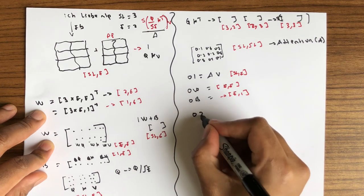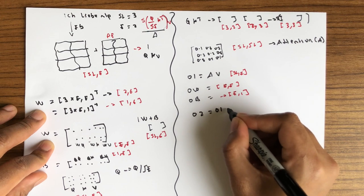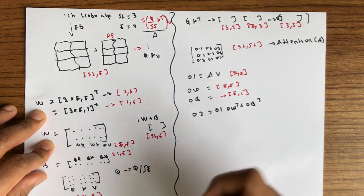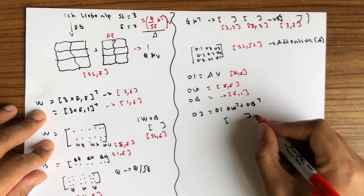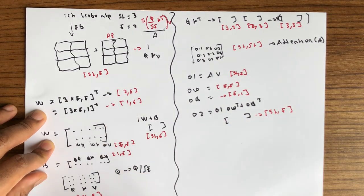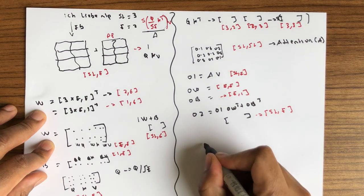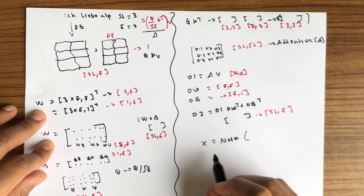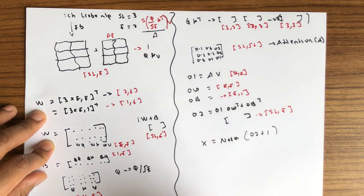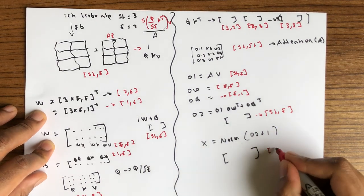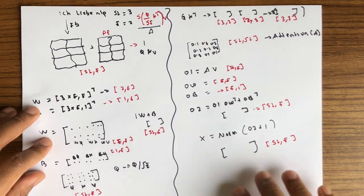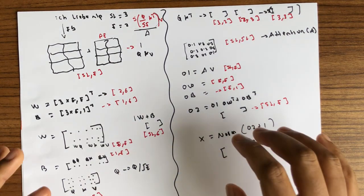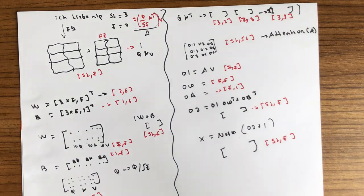Output two is output one times OW transpose plus OB transpose, giving a tensor of dimension sl by e. The final output X of this multi-head attention is the norm of output two plus the residual input ei, still with dimension sl by e. In the next video we'll go into the second multi-head attention, which takes the output of the encoder. Thanks for watching and see you in the next video.